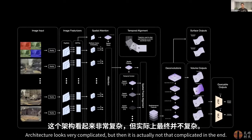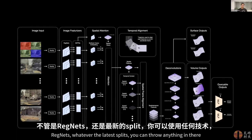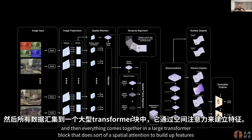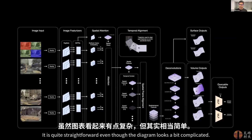The architecture looks very complicated, but it's actually not that complicated in the end. Videos from multiple cameras stream in, and you can choose whatever backbone you want — regnets or whatever the latest is — you can throw anything in there. Everything comes together in a large transformer block that does spatial attention to build up features, and also does temporal attention with some geometry thrown in, to form features that can then be upsampled into the actual predictions. It's quite straightforward, even though the diagram looks a bit complicated.